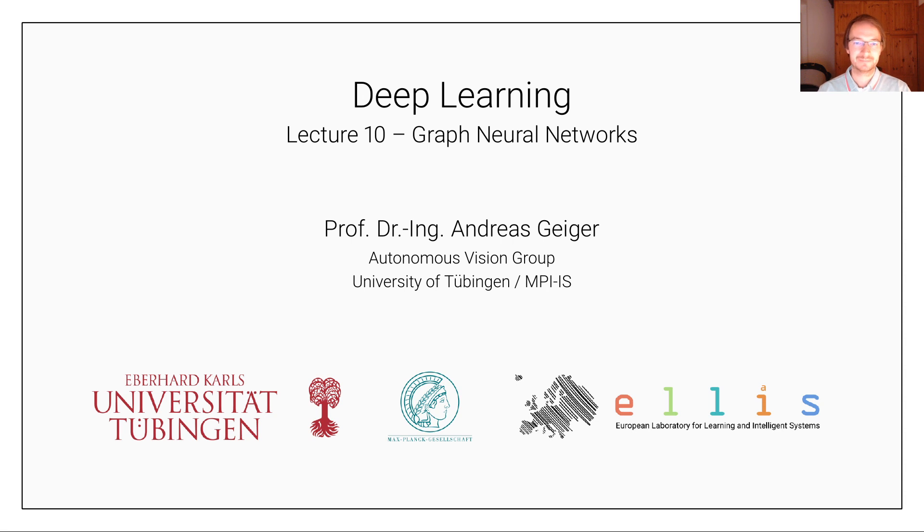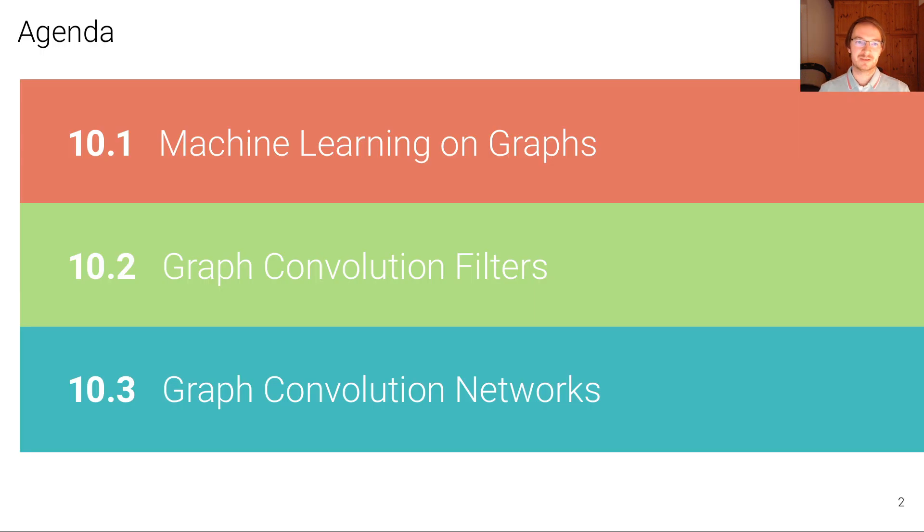Hi, this lecture is on graph neural networks, which refers to a category of neural networks that take a signal on a graph as input and produce a signal on a graph as output. This lecture is structured into three units. In the first unit, we're going to discuss motivation for learning on graphs and have a look at several applications of this model category.